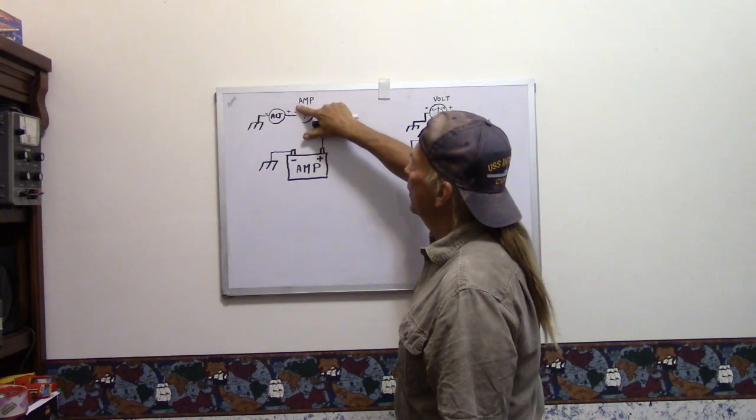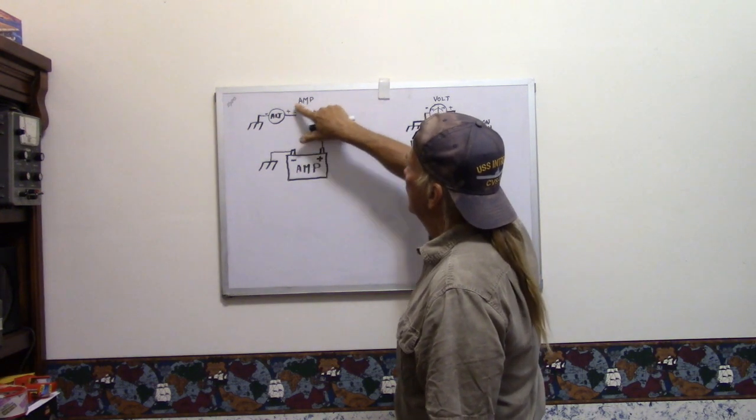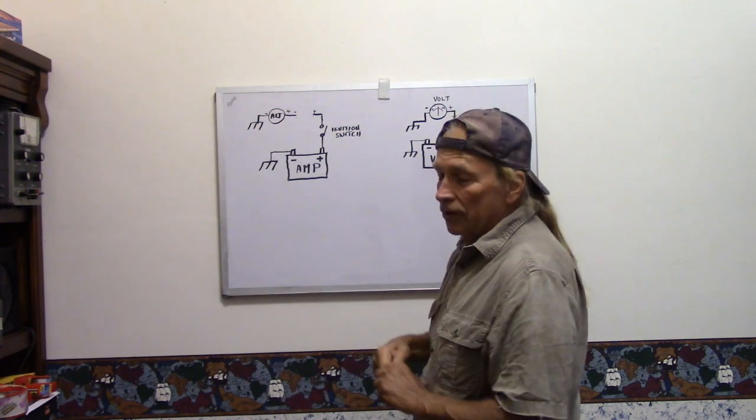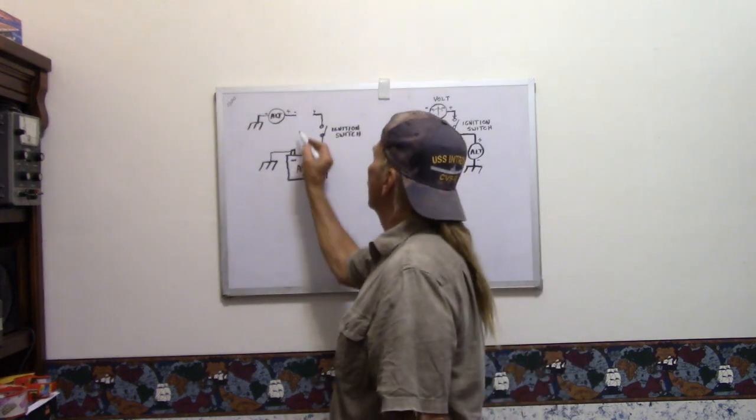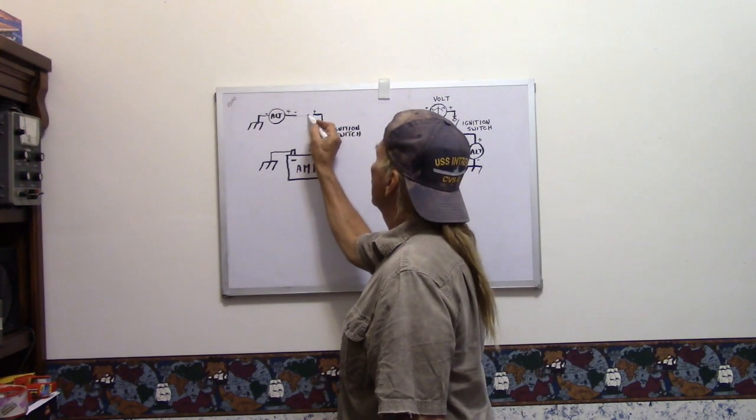So when you remove the amp meter, what you want to do is take those two terminals and connect them together.